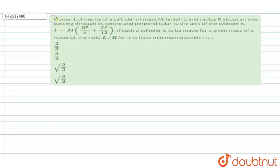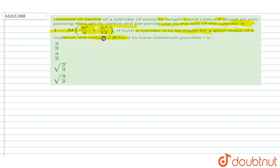Hello, welcome to Doubtnut. In this question, the moment of inertia of a cylinder of mass M, length l, and radius r about an axis passing through the center and perpendicular to the axis of the cylinder is given as I = M(r²/4 + l²/12). If such a cylinder is to be made of a given mass of material, we need to find the ratio l/r for it to have the minimum value of I.